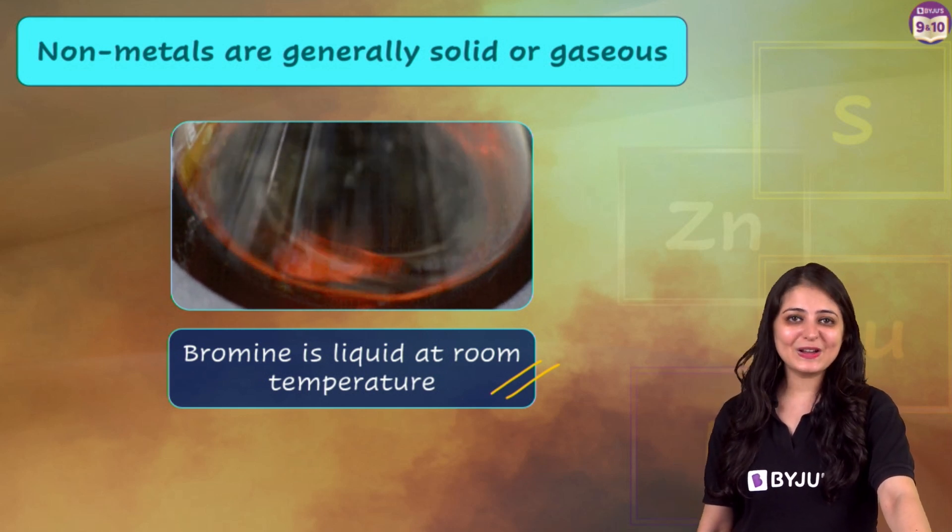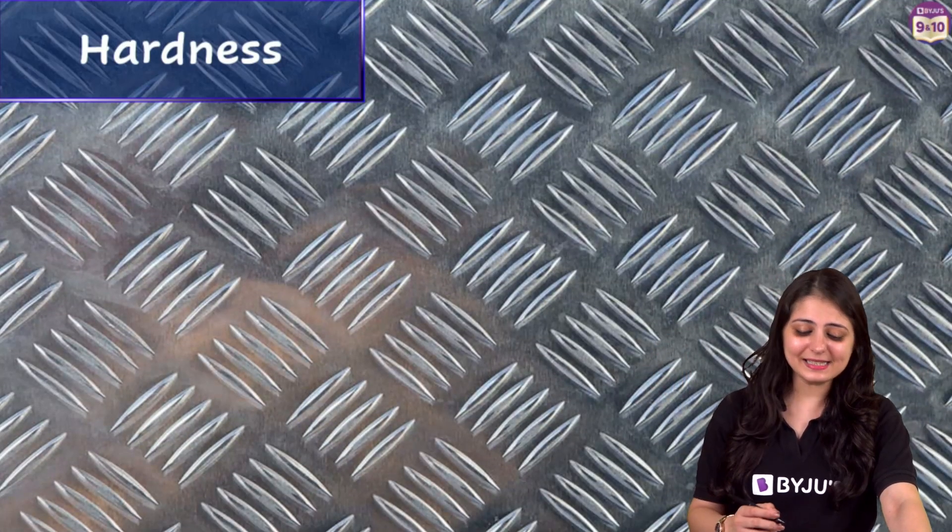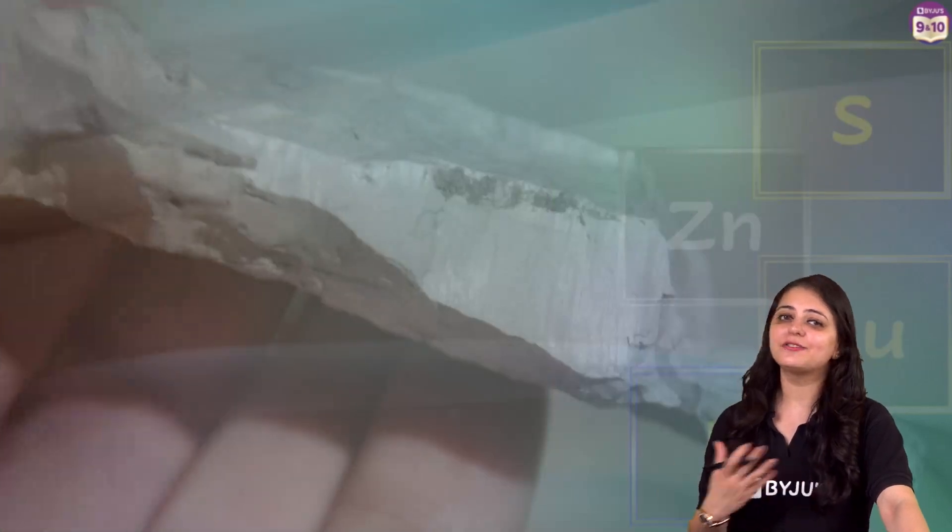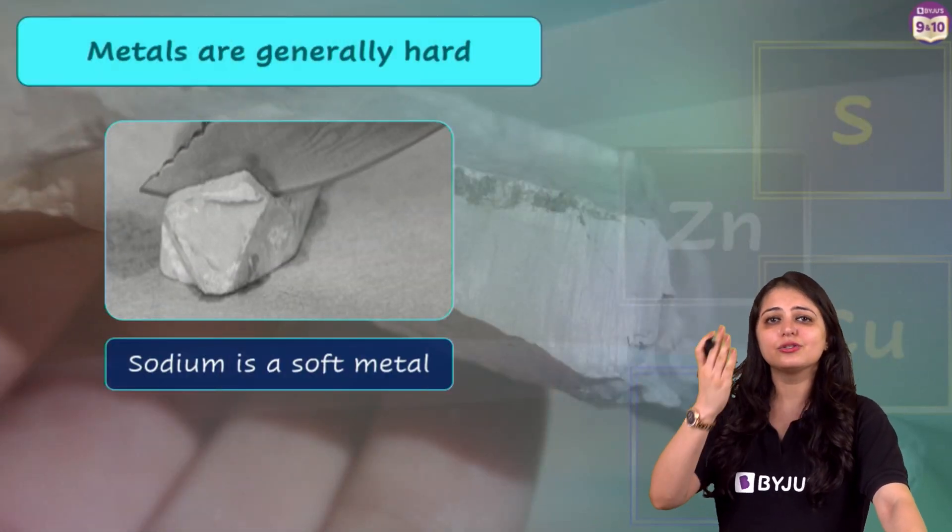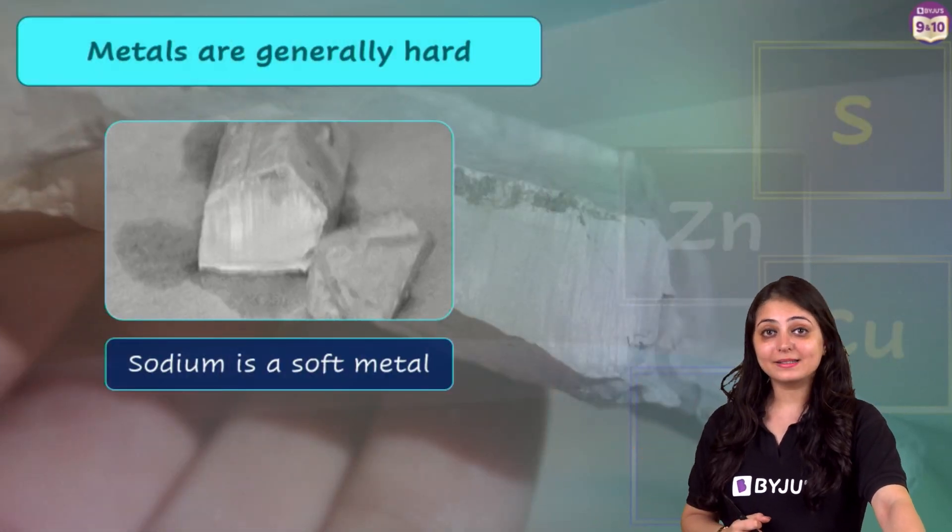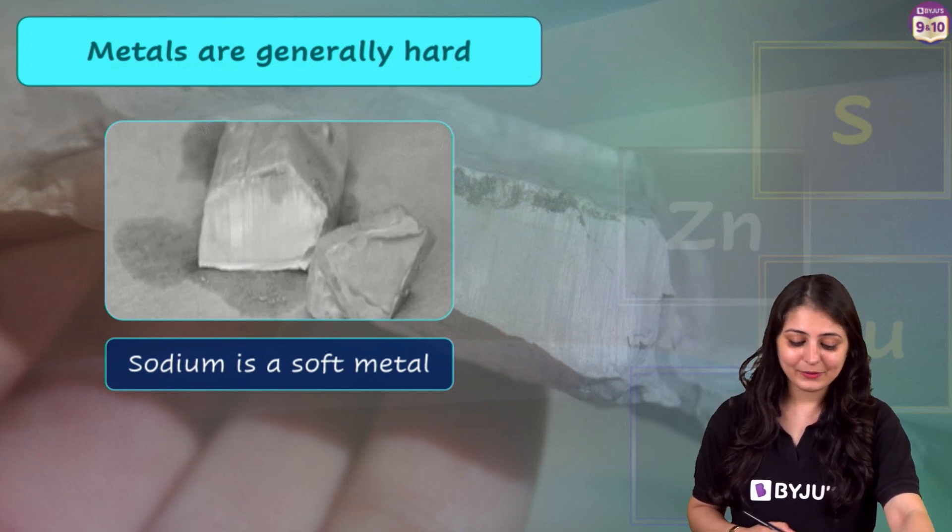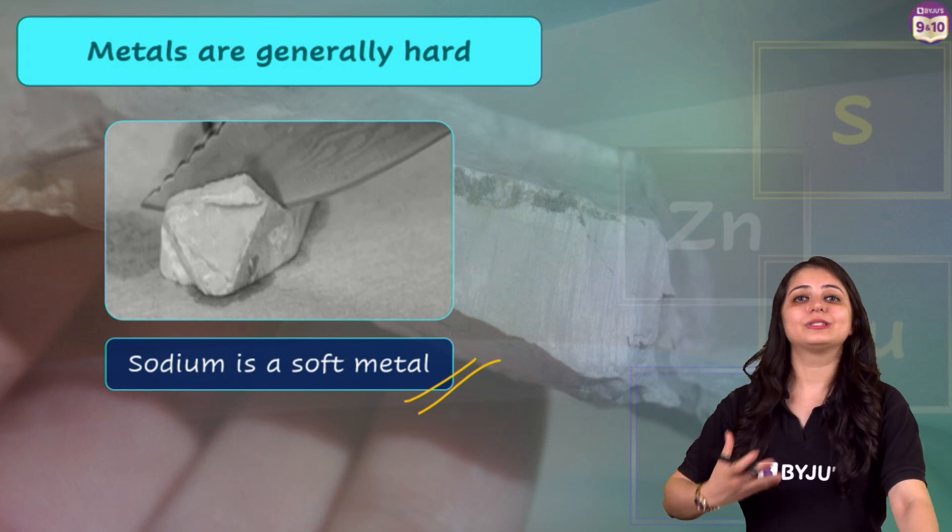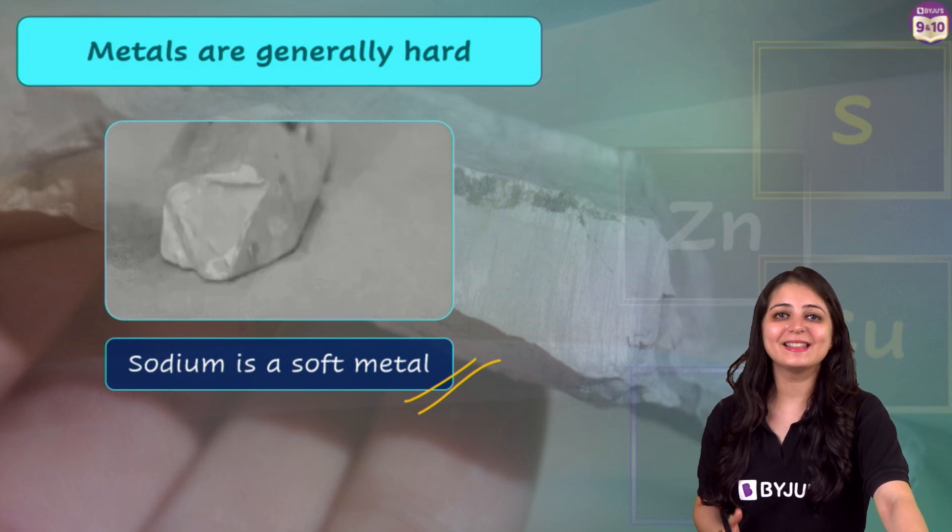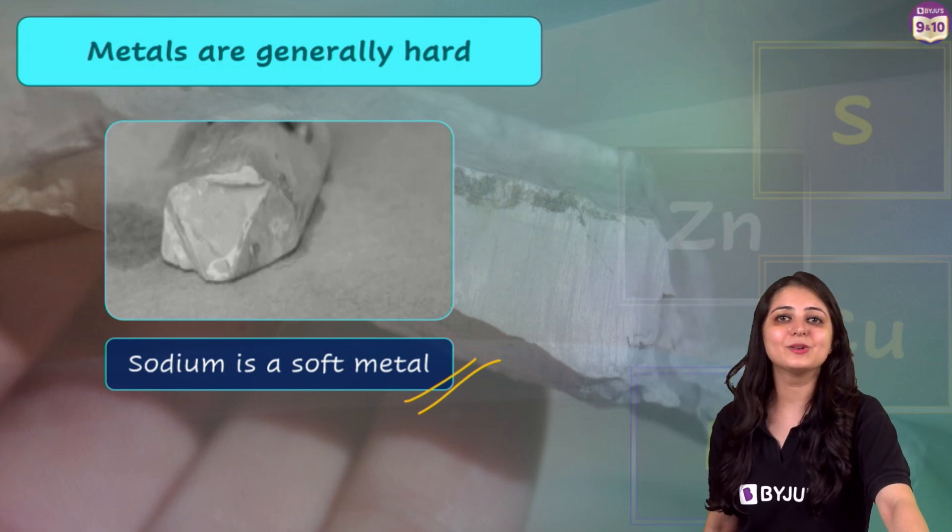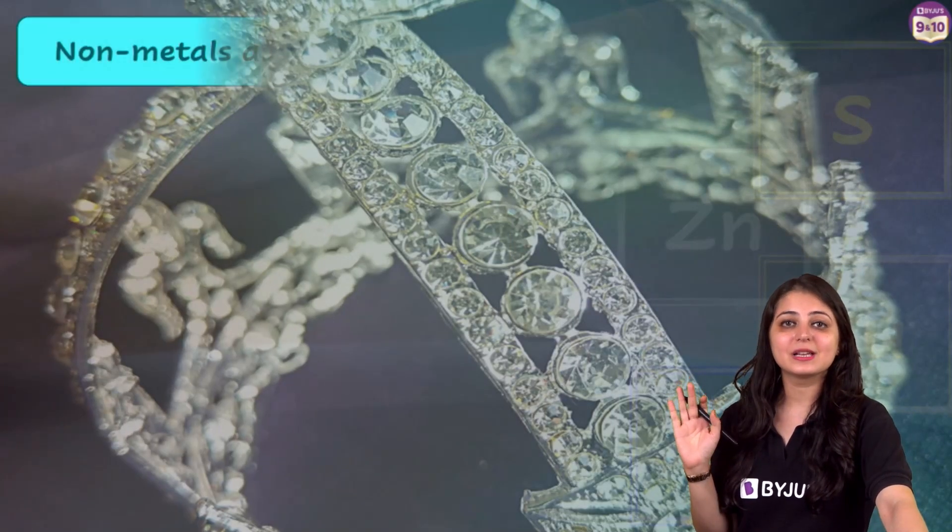Moving on, the next property is hardness. Metals are generally hard - it's difficult to cut or break them. But metals like sodium, potassium, lithium, they are very soft and they can be cut with a knife. On the other hand, non-metals are generally soft, but diamond, an allotrope of carbon, is very hard.